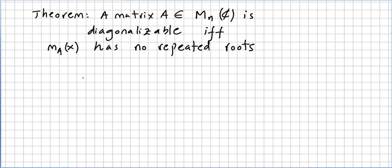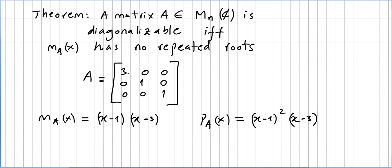Let's say for instance I have a matrix A. I choose this matrix: [3, 0, 0; 0, 1, 0; 0, 0, 1].